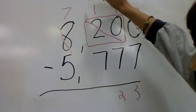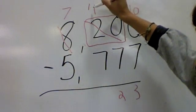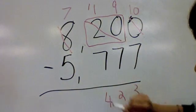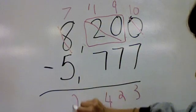The one that you took away, put it right here. Eleven minus seven is four. Seven minus five is two.